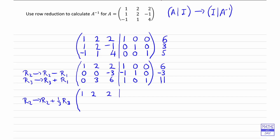Row 1 stays as 1, 2, 2, 1, 0, 0. For the second row, we're adding on a third of row 3: 0 plus 0 will be 0; 0 plus a third of 3 will be 1 — which is the reason I've done this, so that's working out nicely; negative 3 plus a third of 6 is plus 2, so that's going to be negative 1. Then negative 1 plus a third of 1, so that's going to be negative 2 thirds. Then 1 plus a third of nothing, so that stays as 1. And 0 plus a third of 1, so that will be a third. And the last row stays as it is: 0, 3, 6, 1, 0, 1.